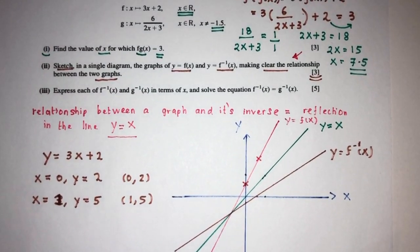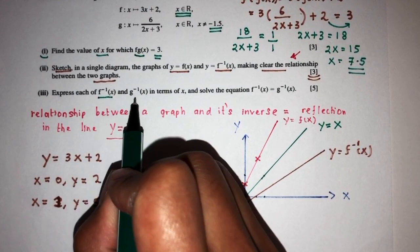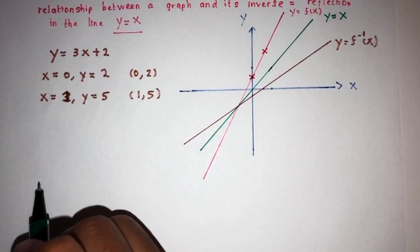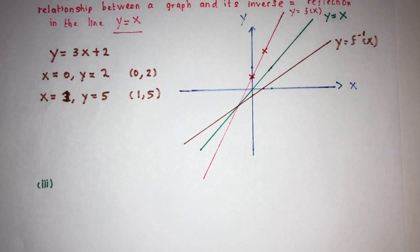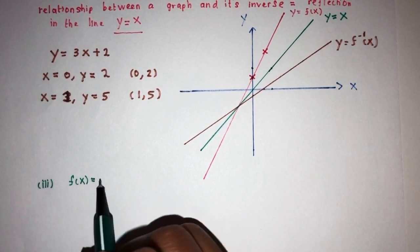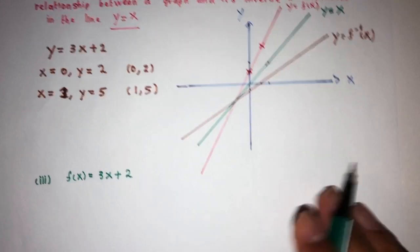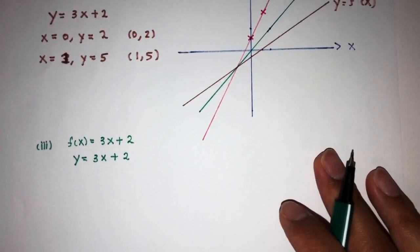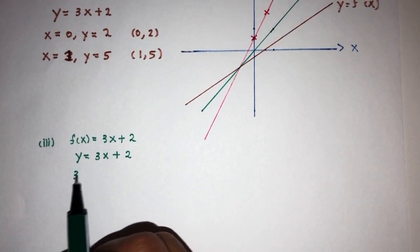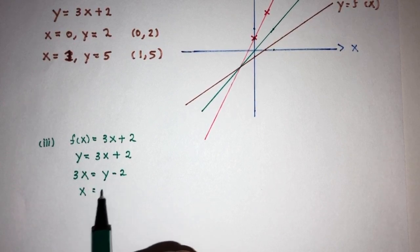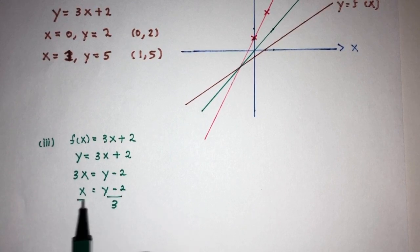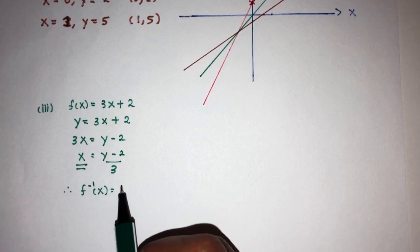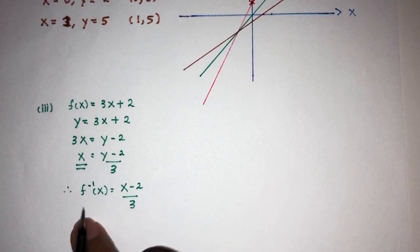Now part 3: we have to express f⁻¹(x) and g⁻¹(x) in terms of x and solve the equation. For f(x) equal to 3x plus 2, to find the inverse let f of x equal y, so y equals 3x plus 2. Making x the subject: 3x equals y minus 2, so x equals y minus 2 divided by 3. Therefore f inverse of x is x minus 2 over 3.